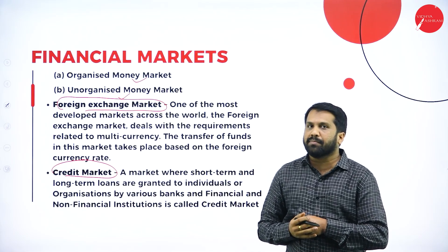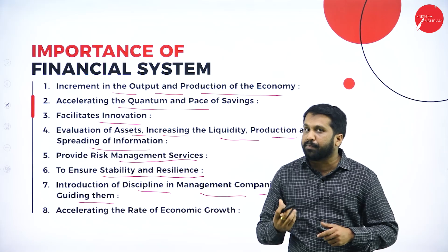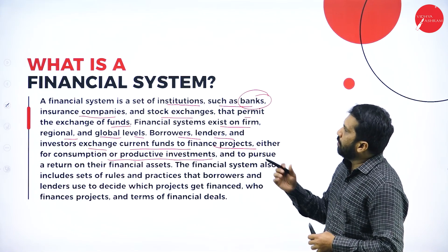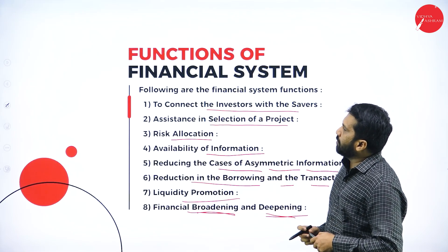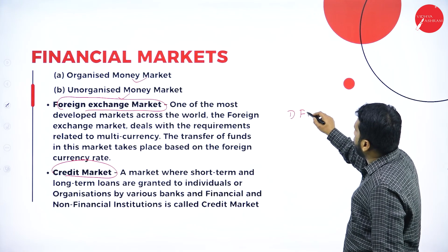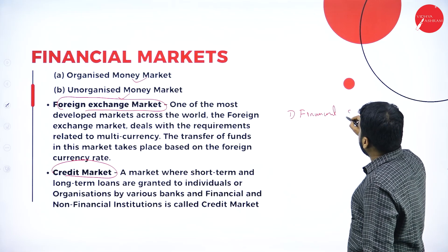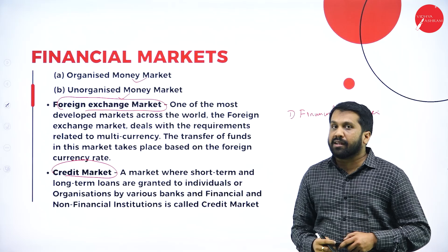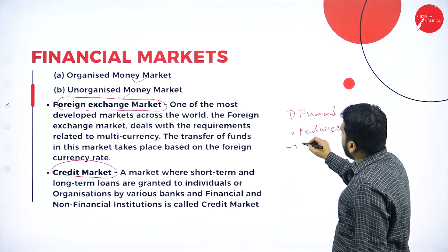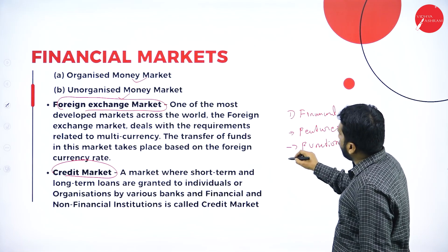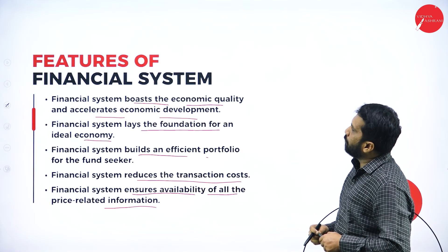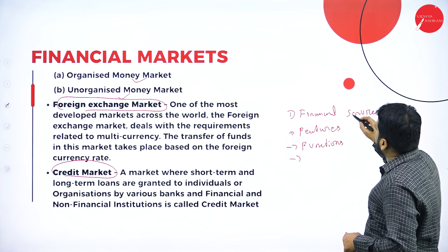To summarize this topic, you need to read all the points carefully. This topic takes about one to two hours to complete. You are supposed to learn: the meaning of financial system, its functions, features, importance, and the four components. For each component — financial institution, financial asset, financial services, and financial market — learn the sub-topics in detail. These are the key areas for your examination.